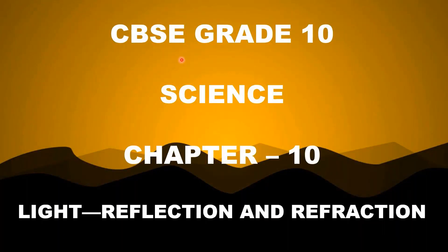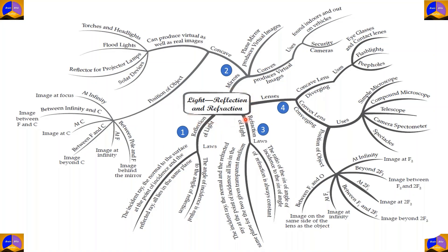Hello guys, welcome to Brain Blitz Audios. Today we're looking at the 10th chapter in the science syllabus of CBSE Grade 10. This chapter is Light Reflection and Refraction. We're going to be using a mind map to explore this chapter. As you can see, it's extensive and has a lot of data, so we'll be using snippets of these mind maps and explaining what each point means.